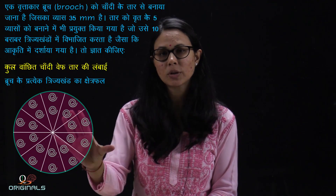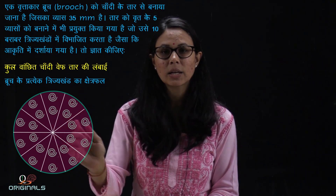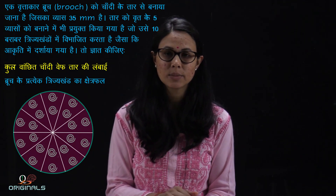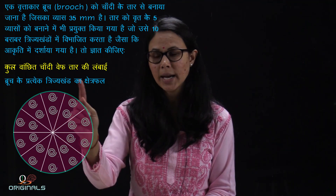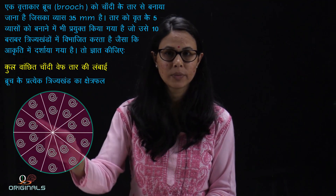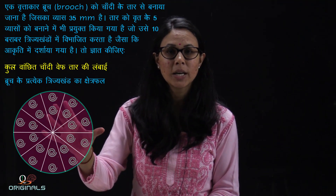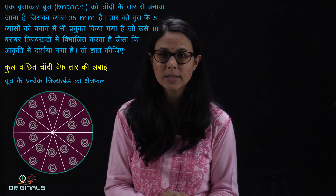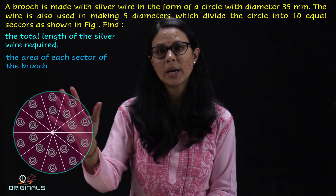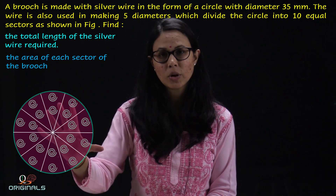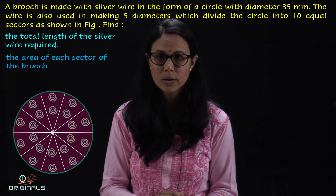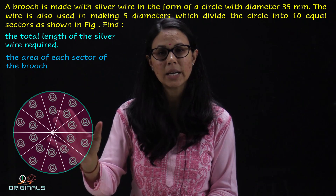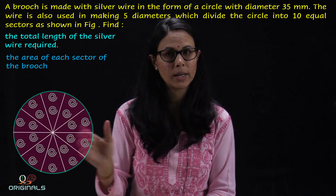These 10 sectors are formed in the broach. We need to see how much silver wire is needed. Where is the silver wire used? One is in the circumference of the circle, where the diameter is 35 mm. We use it in the circumference and also in the 5 diameters. So, the total length is circumference plus the length of 5 diameters.